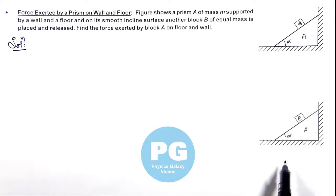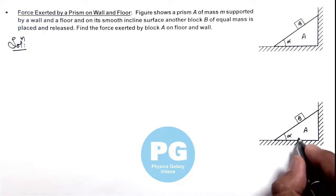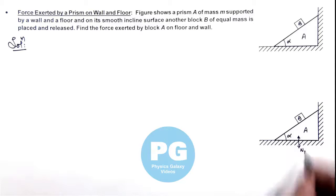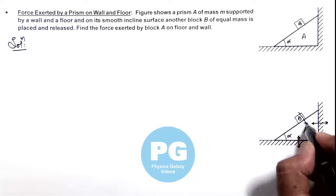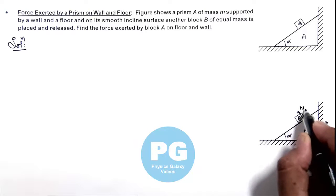Here you can see in this figure, if we draw the normal reactions: one normal reaction will be acting between block A and floor, say this is N1. Another one is acting between the wall and block A, say it is N2. And one normal reaction is between block B and A, and it is say N3.